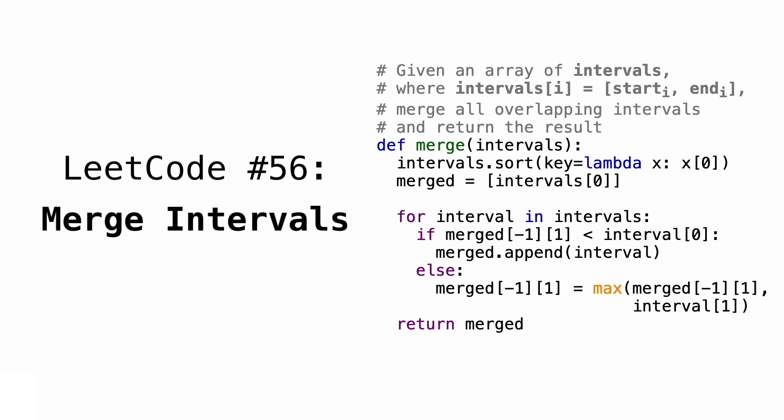In this video, we'll go over LeetCode question number 56, Merge Intervals. Given an array of intervals, where the ith element is another array that contains the starting and ending values of that interval, we need to merge all overlapping intervals and return the new result.